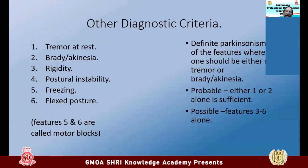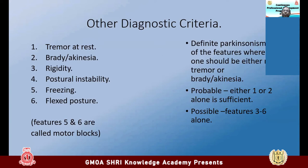There is another diagnostic approach — the UK PDS criteria — which is simpler. It lists six features: tremor at rest, bradykinesia, rigidity, postural instability, freezing of gait, and flexed posture. If all these features are present, the diagnosis is definite Parkinsonism. If the patient has Parkinsonism with at least tremor and bradykinesia among the features, the diagnosis is probable. Possible Parkinsonism applies when features five or six are present.